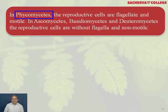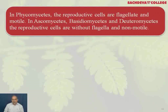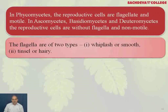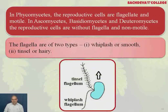In phycomycetes, the reproductive cells are flagellate and motile, while in ascomycetes, basidiomycetes, and deuteromycetes, the reproductive cells are without flagella and are non-motile. The flagella are of two types: whiplash or smooth, and tinsel or hairy. You can see the tinsel hairy flagellum and the whiplash flagellum.